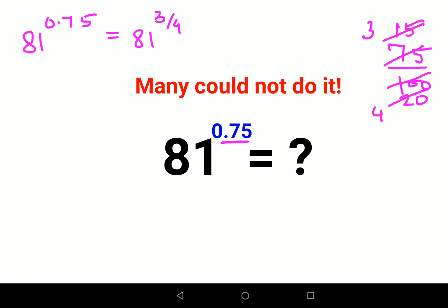Now please understand, whenever you have an index which is 1 upon anything, it can be written as nth root of a. So here I can write this as 81 raised to 3 times 1 upon 4.